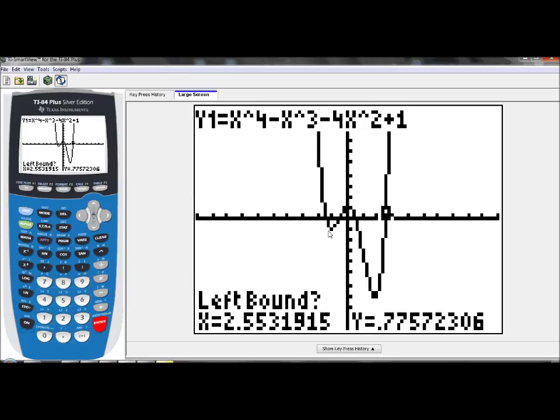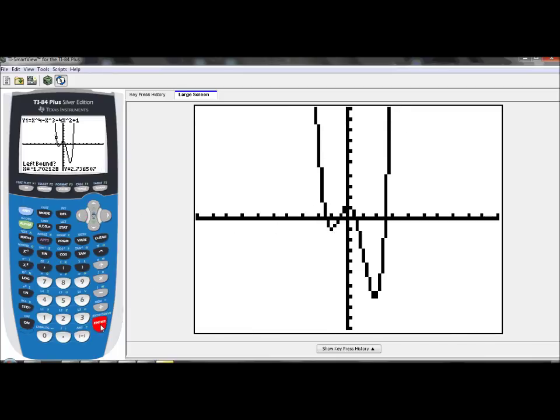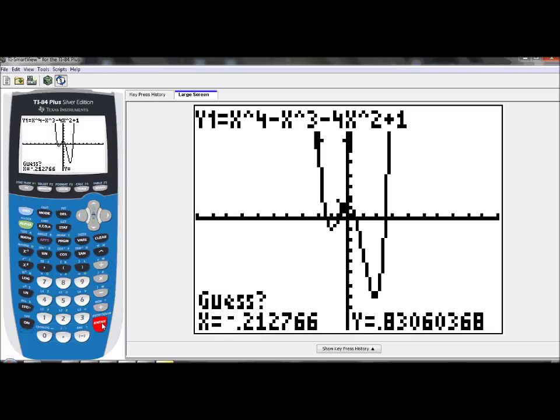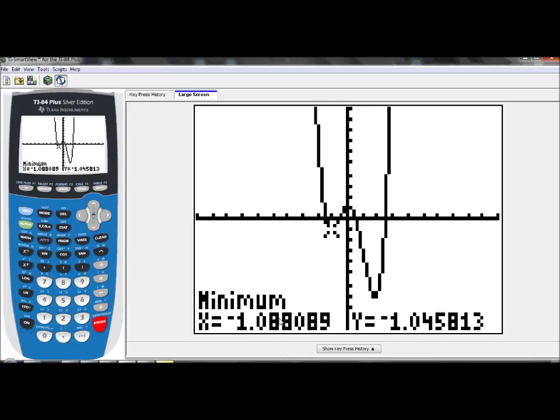So I'm going to have to take my cursor. Again, I go left to right. I'm going to work with this minimum first. Again, you're asked left bound. It's the same process. Pick a point to the left of that minimum value. So I'm going to hit enter. Now the calculator says right bound. So pick a point to the right of the minimum value. Hit enter. Guess. Just hit enter again. And there's one of my minimum values, negative 1.09 and negative 1.05, that coordinate.